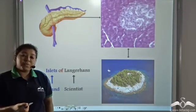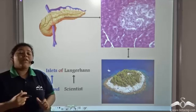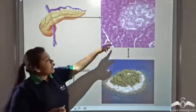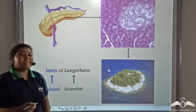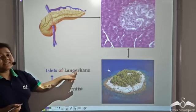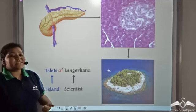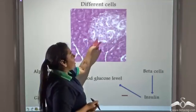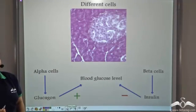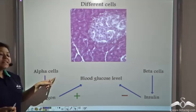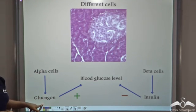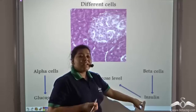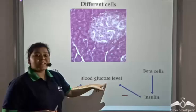So the pancreas secretes both insulin and glucagon that have opposite functions. Now how is that possible? Well, just like islands, there are many island-like structures in the pancreas. And these islands are known as the islets of Langerhans. Now these islets of Langerhans contain different kinds of cells. One such cell is known as alpha cell and alpha cells secrete glucagon. And we know glucagon increases the blood glucose level as opposed to insulin which is secreted by another cell known as the beta cells that reduces the blood glucose level.